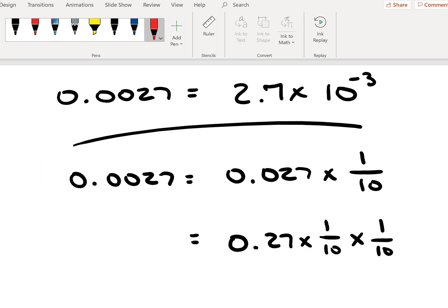From that point, we will pull out successive factors of 1 over 10 until we get our lead number in the form that we want, where there is one and only one digit to the left of the decimal point.